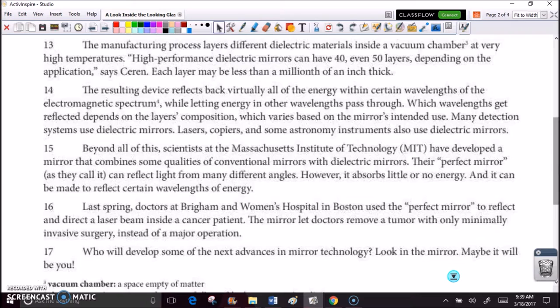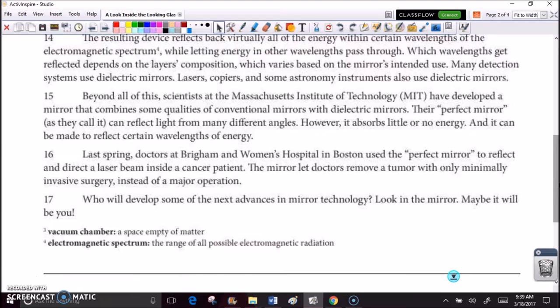Beyond all of this, scientists at the Massachusetts Institute of Technology, MIT, have developed a mirror that combines some qualities of conventional mirrors with dielectric mirrors. Their perfect mirror, as they call it, can reflect light from many different angles. However, it absorbs little or no energy, and it can be made to reflect certain wavelengths of energy.